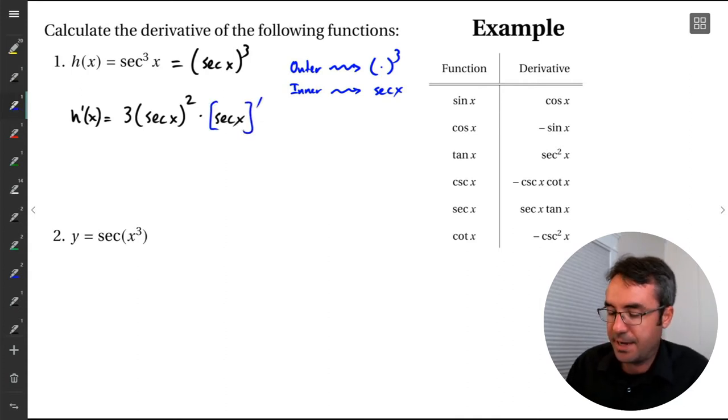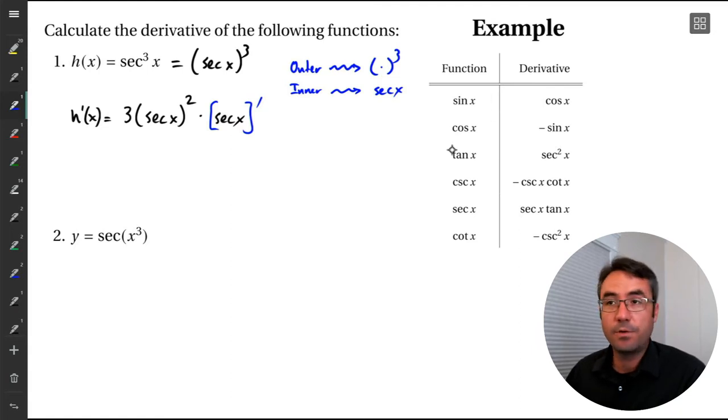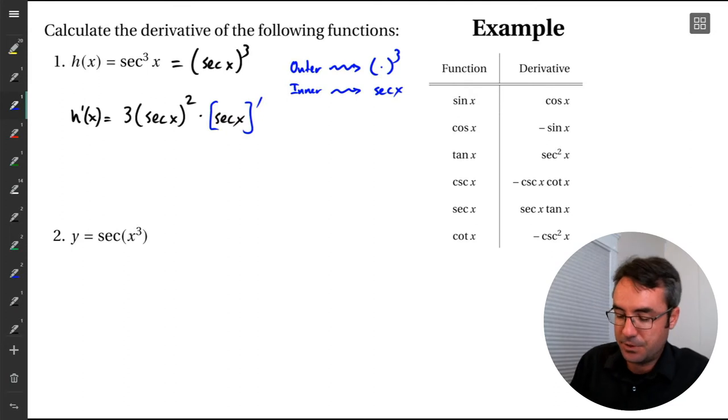But because we have this more complicated term inside the parentheses, we then have to multiply by its derivative. So derivative of secant x. We go to our table. If we don't remember, hopefully we're starting to remember what the derivative of secant is. But if we don't remember, where is it? Here we go. Derivative is secant x times tan x. So we just fill that in.